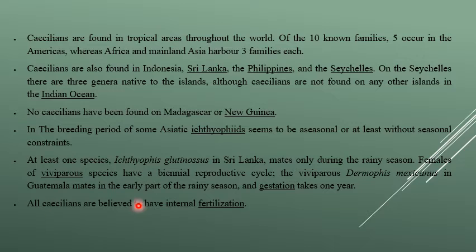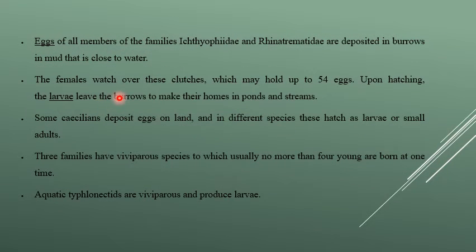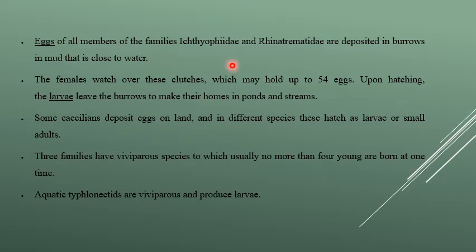Caecilians have internal fertilization. Members of many families deposit eggs in burrows made in mud, which are then filled with water.